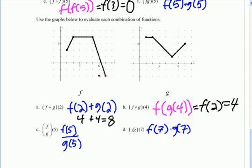On part c, we're just dividing them. So what's f(5)? So go to this graph. What's f(5)? We can see it's 4. And what's g(5)? We can see it's 1. And 4 over 1 is 4.